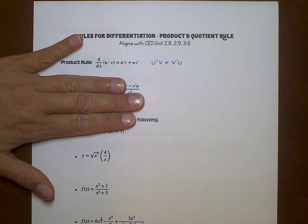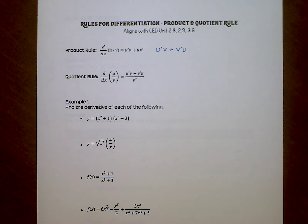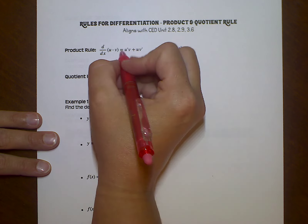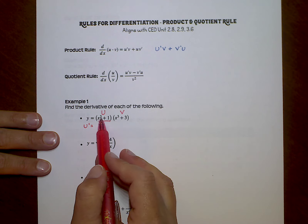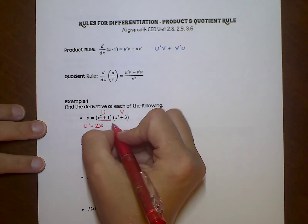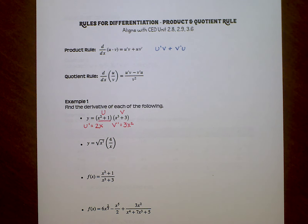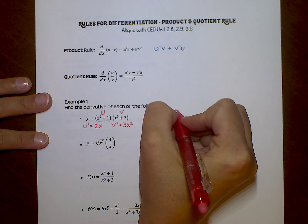Before I go on to the quotient rule, let's go down and do the first couple of examples that use the product rule. With this first one, we could get away with foiling and not have to worry about the product rule, but I want to do this with the product rule so you can see how it works. This is my u and this is my v — these are my two expressions. So u prime, the derivative of u: the derivative of x squared plus 1 — x squared becomes 2x, and the 1 falls away because its derivative is 0. And v prime would be 3x squared, and the 3 falls away.